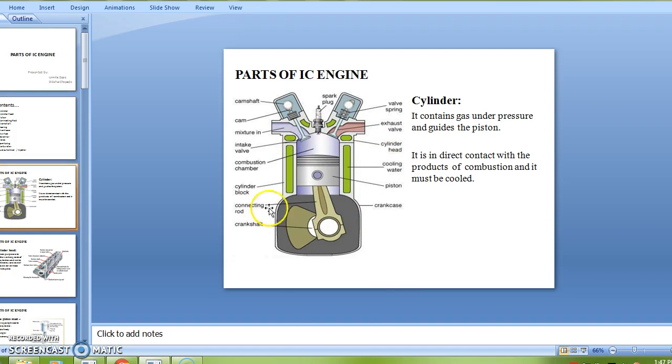And this is the detail diagram which shows the different parts of IC engine. First we will see the cylinder. It contains gas under pressure and guides the piston. It is in direct contact with the product of combustion and it must be cooled.